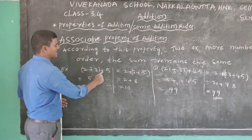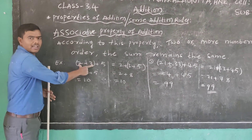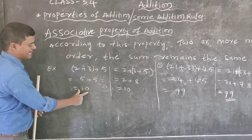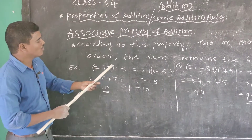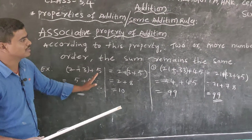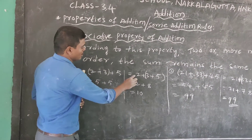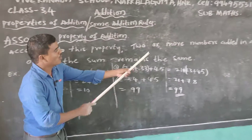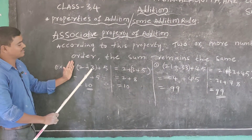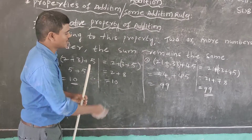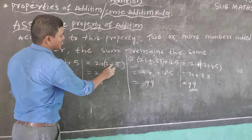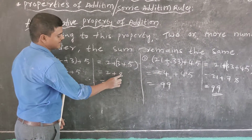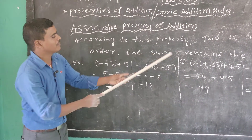Example: (2 plus 3) plus 5. First, do the bracket value: 2 plus 3 equals 5. Then 5 plus 5 equals 10. Now change the order of grouping: 2 plus (3 plus 5). Do the bracket first: 3 plus 5 equals 8. Then 2 plus 8 equals 10. Both answers are the same — 10. The sum remains the same regardless of grouping order.